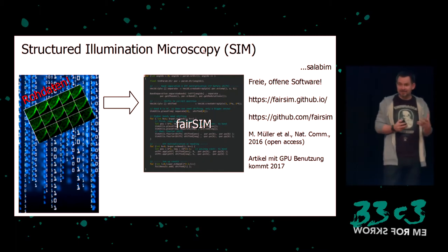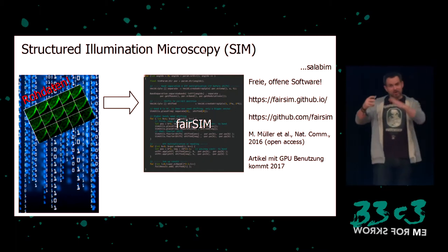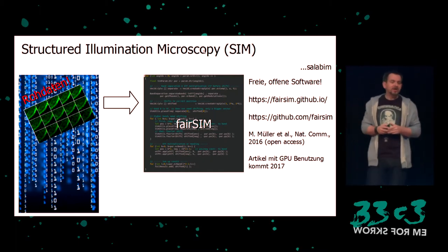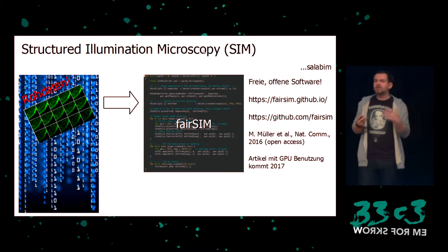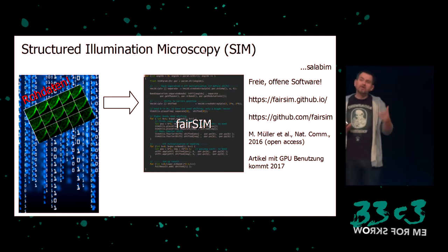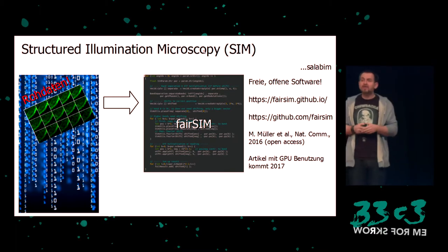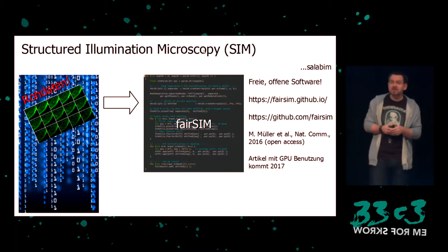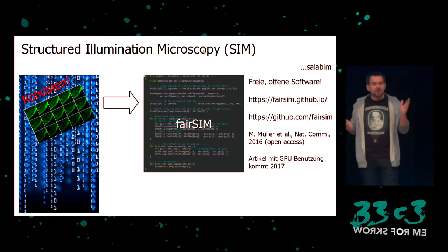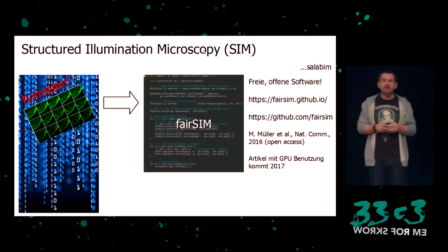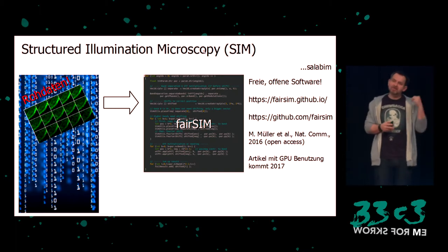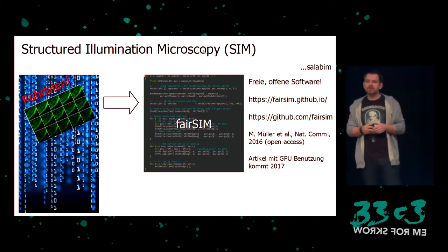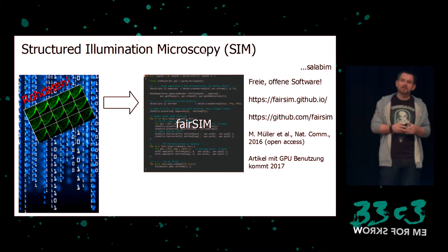How does it work? We take the raw data — the shifts and rotations — and put it into software, for example FairSIM. FairSIM is open source software. If you want to, just look at GitHub and have a look at it.